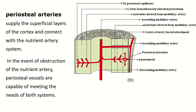The periosteal artery enters within the compact bone by using Volkmann's canal, where it gives longitudinal branches occupying the Haversian canal, ultimately uniting with the branches of the nutrient artery. Thus the periosteal artery supplies the outer one-third of the compact bone and the nutrient artery supplies the inner two-thirds of the compact bone of the diaphysis. These two vessels anastomose with each other. If the nutrient artery is occluded by aneurysm, the periosteal artery can successfully provide nutritional supply to the bone.